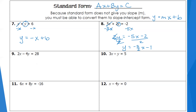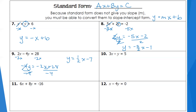For number nine, I subtract 2x from both sides, leaving negative 4y equals negative 2x plus 28. Then I divide by negative 4 to get y by itself. Negative 2 divided by negative 4 is positive one-half, keeping the x term. And 28 divided by negative 4 is negative 7. So the equation in slope-intercept form is y equals one-half x minus 7. Go ahead and try numbers 10, 11, and 12.